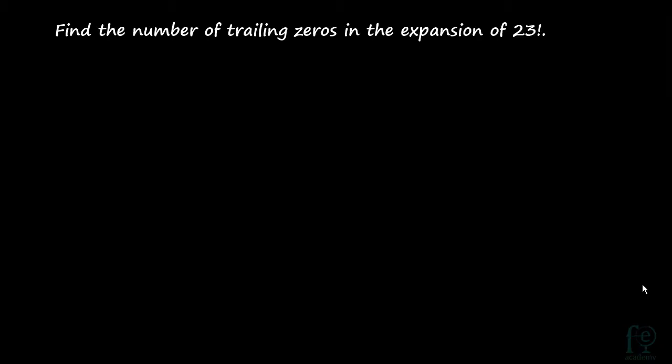Hi friends, welcome to today's video. Today we are going to see how to find the trailing zeros in a factorial of a number. This video is done as per the request of one of my subscribers. So our first question is: find the number of trailing zeros in the expansion of 23 factorial.